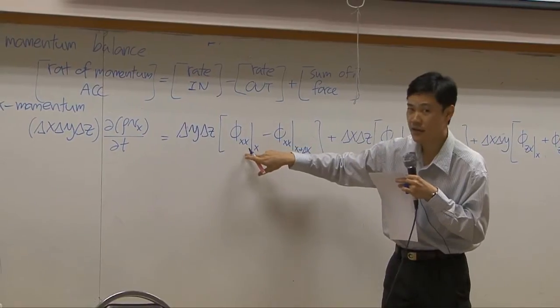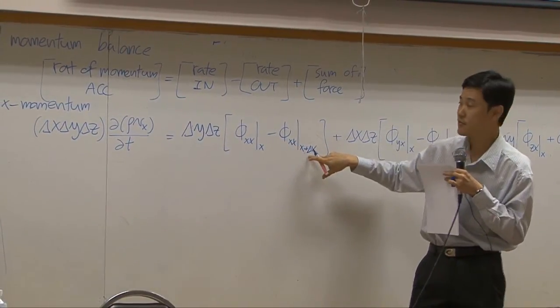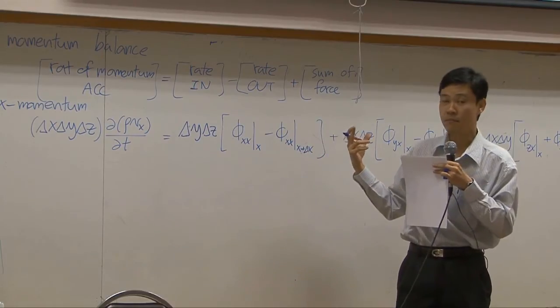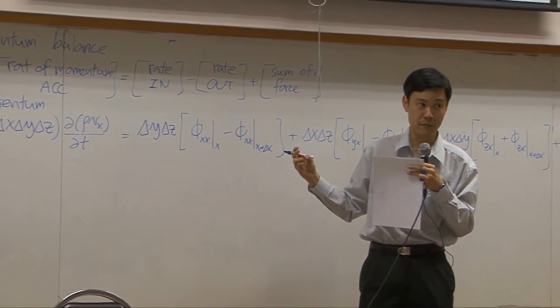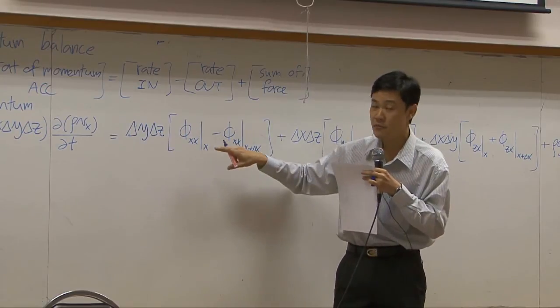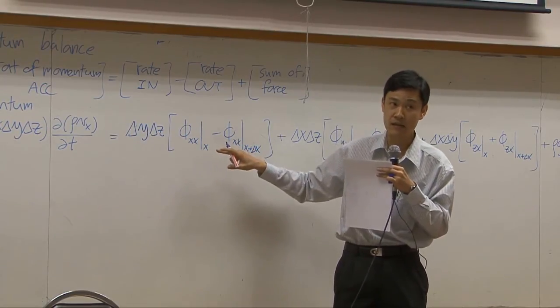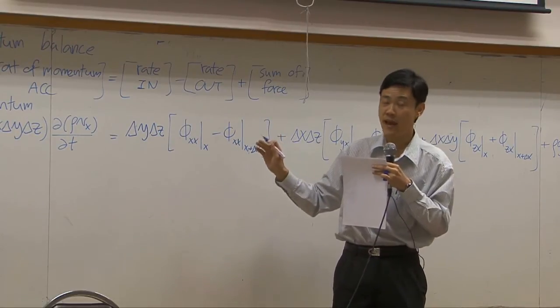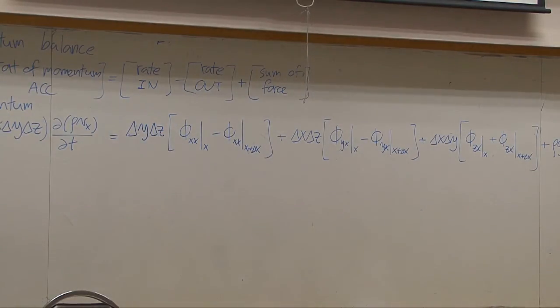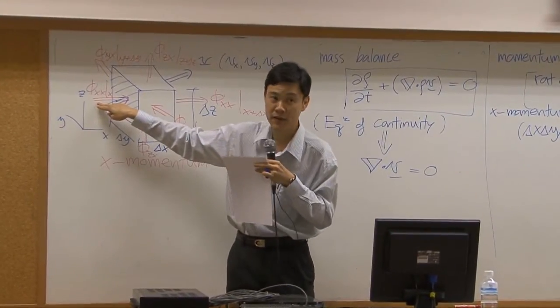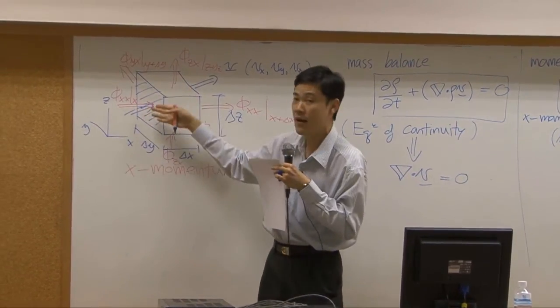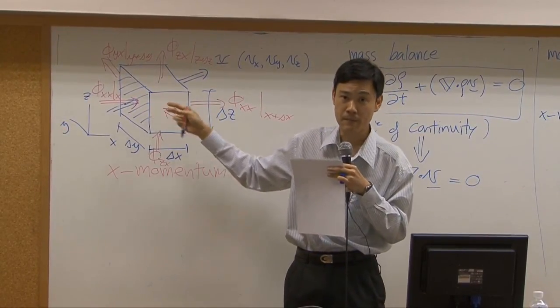The balance starts by in minus out. We have in in x direction minus out in x direction. And as we have done before, the balance is supposed to be multiplied by the area perpendicular to the direction of transfer. So right now we look into x momentum transfer in x direction. So it must be multiplied by area perpendicular to x direction. The area perpendicular to x direction would be delta y delta z.